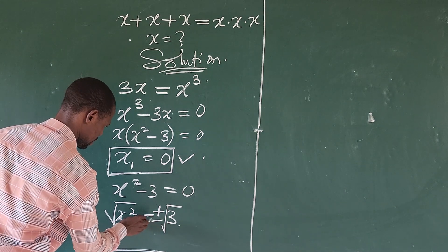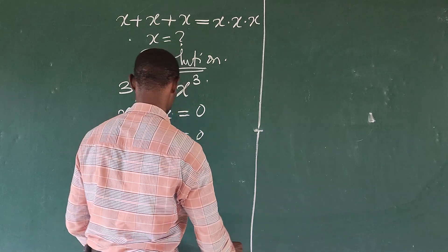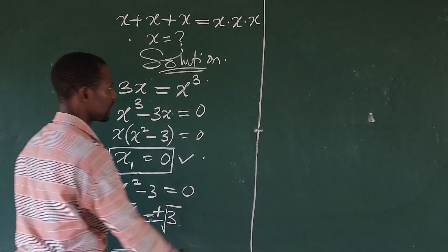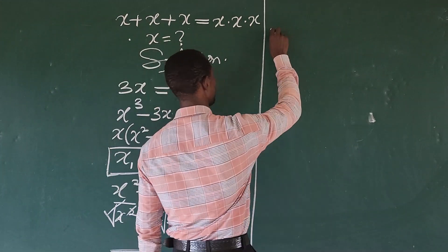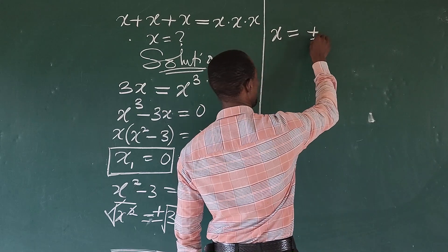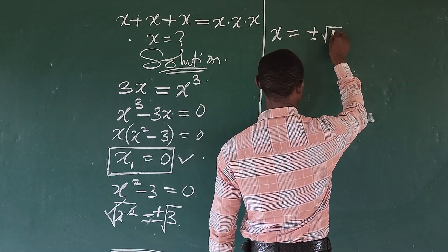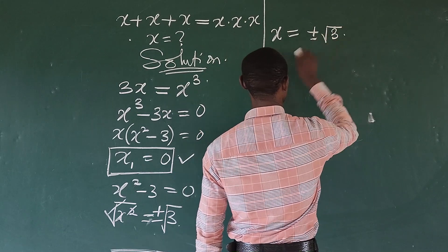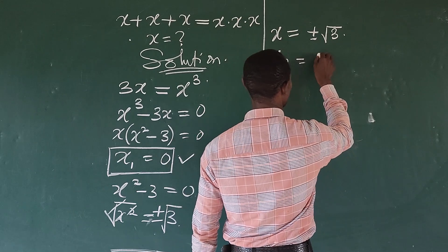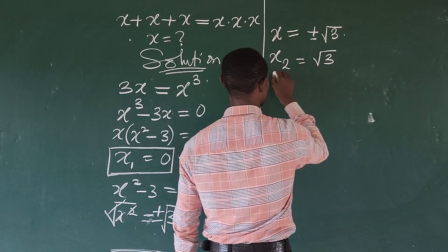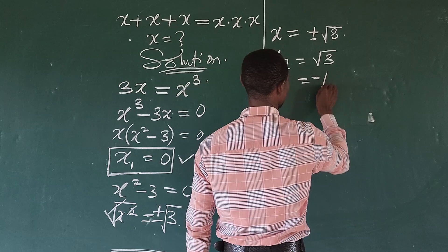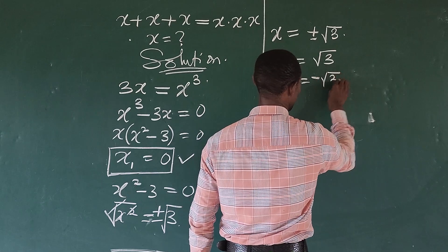So we introduce our plus or minus, and the radical goes with it. So we will have x equal to plus or minus the square root of 3. So x2 is equal to plus root 3 and x3 is equal to minus root 3.